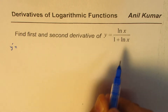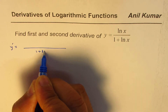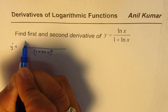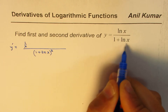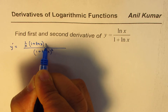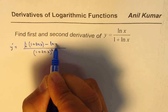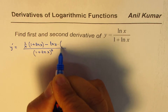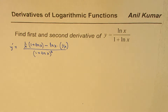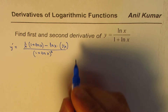The first derivative will have denominator squared, which is (1 + ln(x)) whole squared. The derivative of ln(x) is 1/x times the denominator (1 + ln(x)), minus ln(x) times the derivative of the denominator which is 1/x. So that becomes the first derivative.